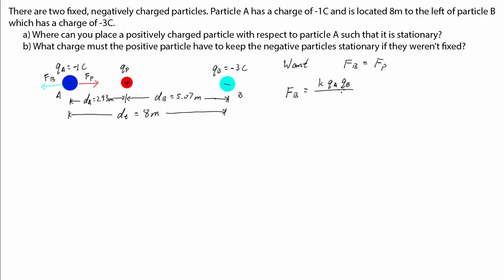Using Coulomb's law again, we get these two equations. Equating them and cancelling terms. Putting in the numbers and then solving for QP. We get a negative number.